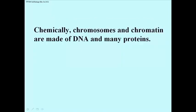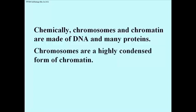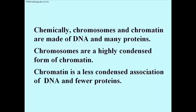Chemically, chromosomes and chromatin are made up of DNA and different proteins. Chromosomes are highly condensed forms of chromatin. Chromatin then is a less condensed association of DNA, with in fact fewer proteins.